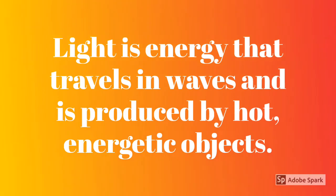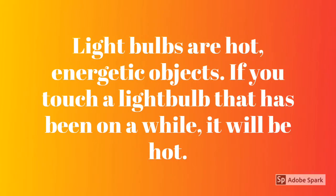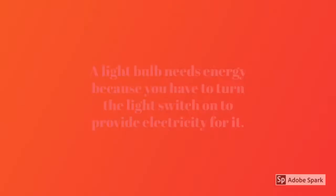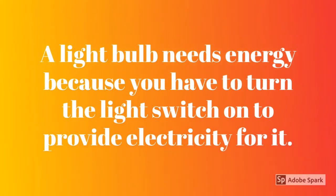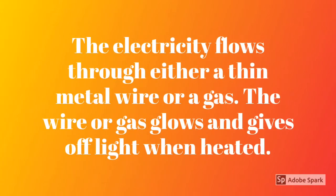Light is energy that travels in waves and is produced by hot energetic objects. Light bulbs are hot energetic objects — if you touch a light bulb that has been on a while, it will be hot. A light bulb needs energy because you have to turn the light switch on to provide electricity for it. The electricity flows through either a thin metal wire or a gas, which glows and gives off light when heated.